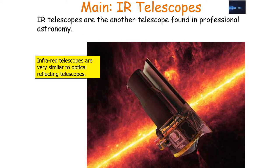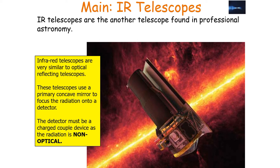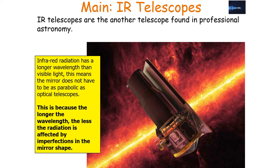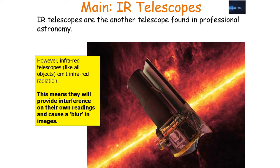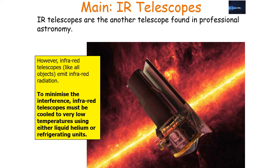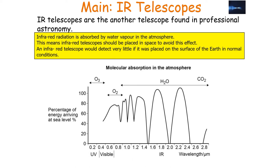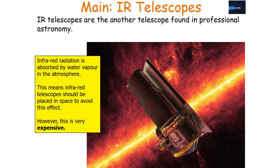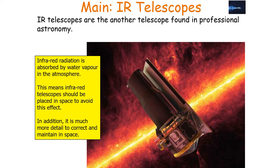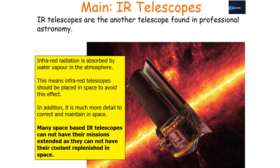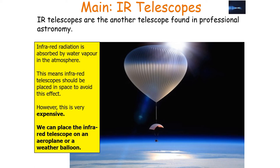Infrared telescopes are similar to optical reflecting telescopes, using a primary concave mirror to focus radiation onto a detector (a CCD). Infrared radiation has a longer wavelength than visible light so the mirror doesn't need to be as parabolic. However, all objects emit infrared radiation, causing self-interference, so infrared telescopes must be cooled to very low temperatures using liquid helium or refrigerating units. Infrared radiation is also absorbed by water vapour in the atmosphere, so ideally these telescopes should be placed in space, on high-altitude aircraft, weather balloons, or on high, dry mountaintops such as Mauna Kea, Hawaii.